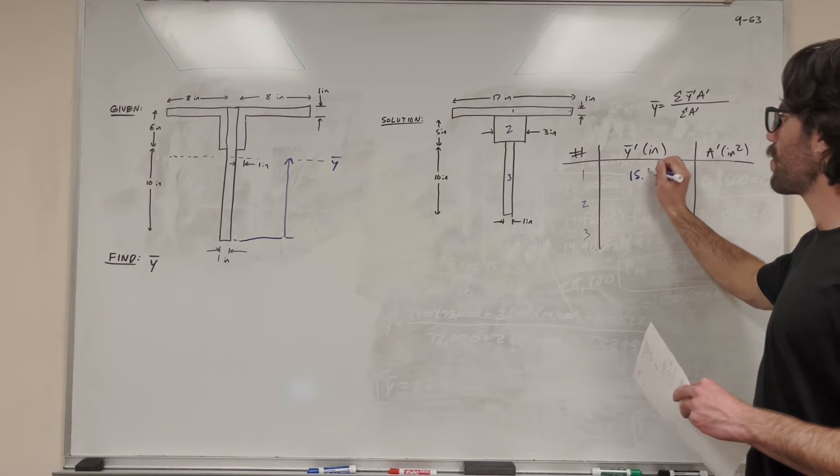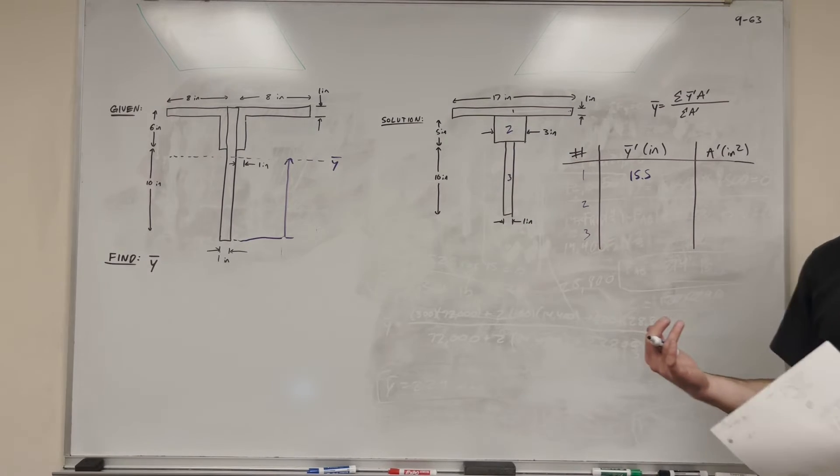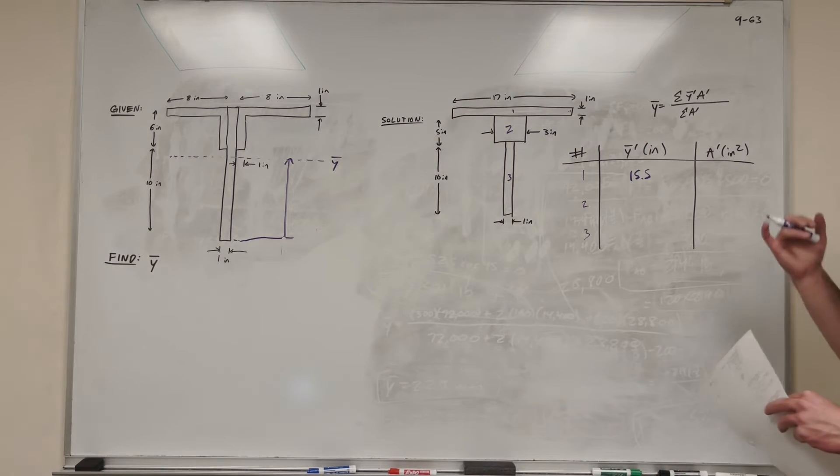It's going to give us 15.5 inches. So that's kind of confusing, but make sure that you're always counting from the bottom where you're taking the center of mass from, which in the shape defines as from the x-axis. So now the area of the shape, well it's 17 inches times 1 inch, base times width, 17 inches.